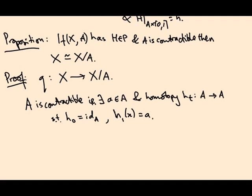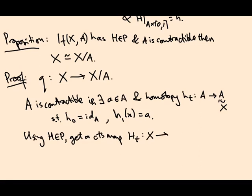And okay, this homotopy goes from A to A, but I could also think of it as going to X, because A is a subset of X. So what I can do is, using the homotopy extension principle, or homotopy extension property, we get a continuous homotopy H_t from X to X, such that H_0 is the identity on X, and H_t restricted to A is this homotopy little h_t.